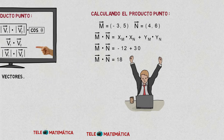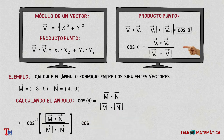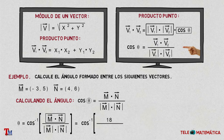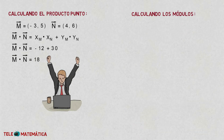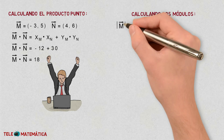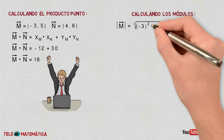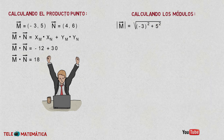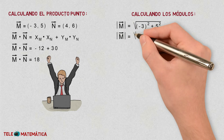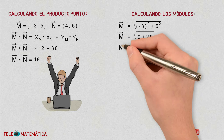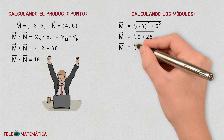We replace in the formula: cosine⁻¹ of 18 over the module of M times the module of N. The module of vector M equals the square root of (−3)² plus 5², which is the square root of 9 plus 25, so the module of M equals the square root of 34.